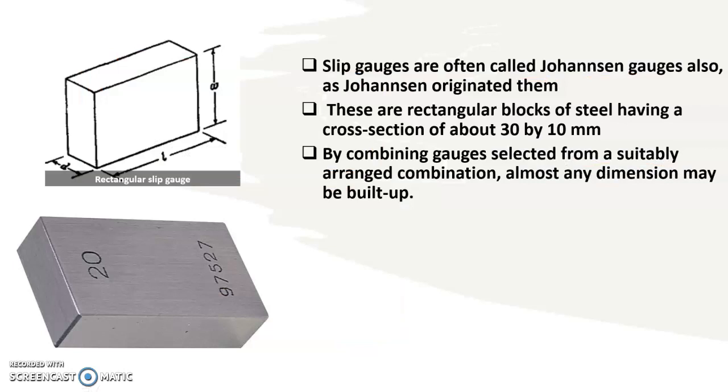Slip gauges are rectangular in shape and made of steel having a cross section of about 30 by 10 mm. 30 by 10 mm means length will be 30 mm and the width will be 10 mm.